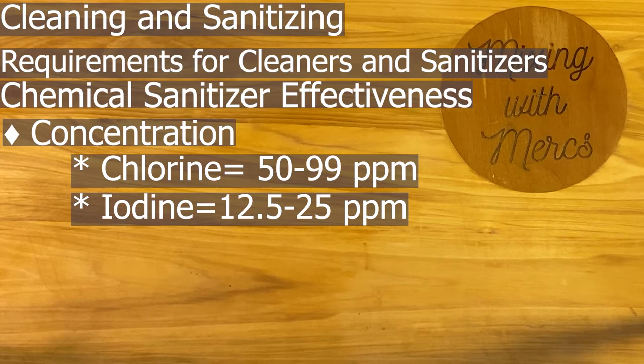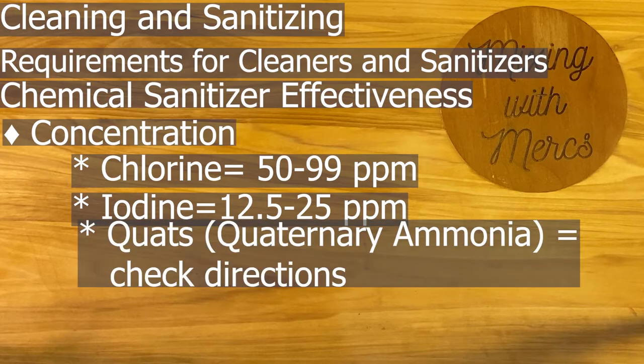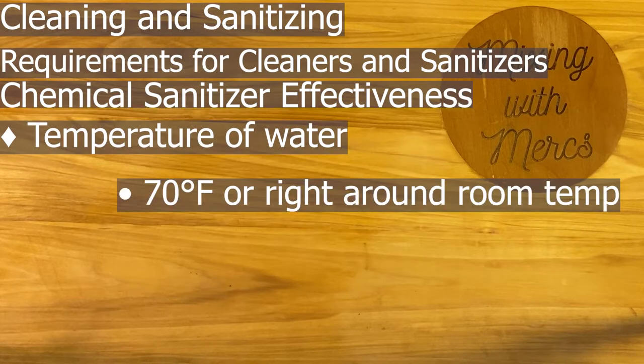Your next type of sanitizer is iodine, used at 12.5 to 25 parts per million. A lot of places don't use this because it can stain things. Your final approved option is quaternary ammonia, or quats, used a lot in bars or places that want shiny glasses because it doesn't leave spots. Just follow the manufacturer's directions for quats, as the concentration can vary by manufacturer.